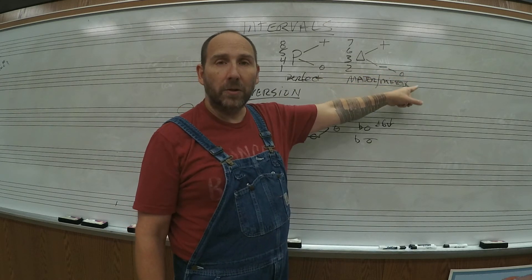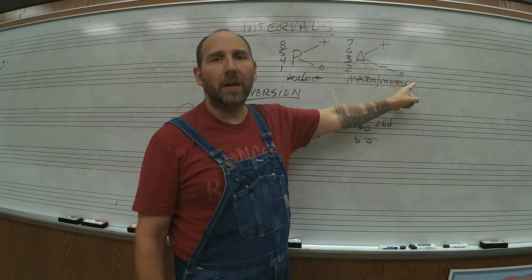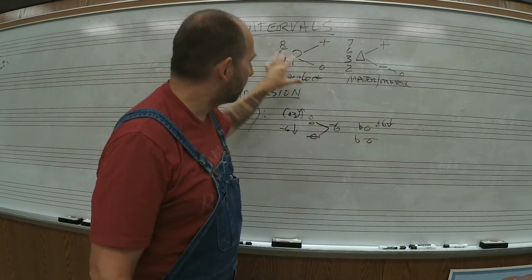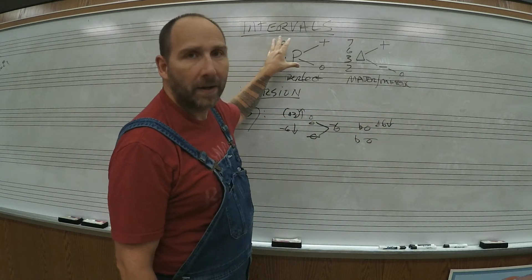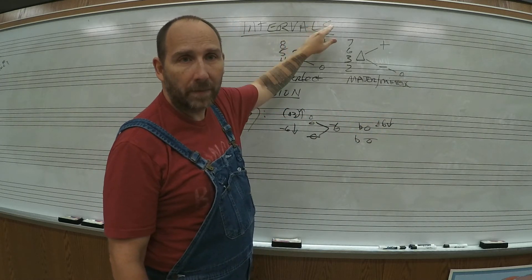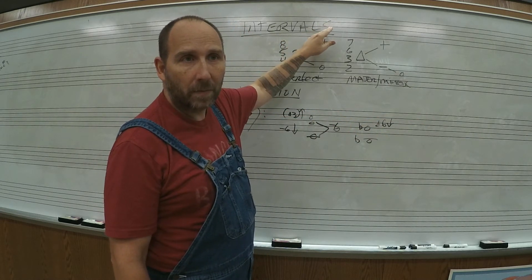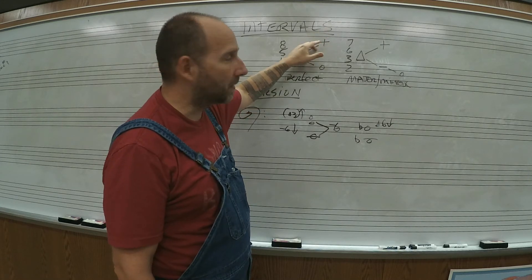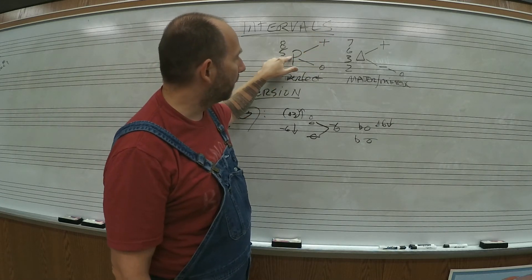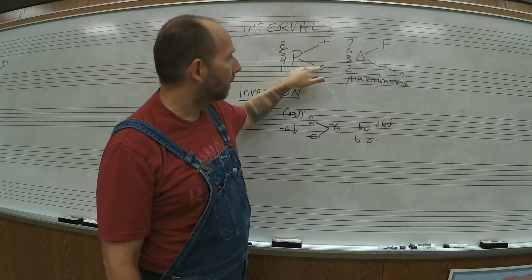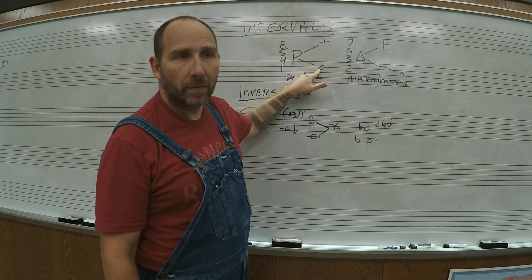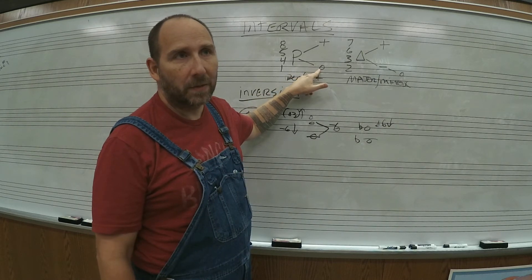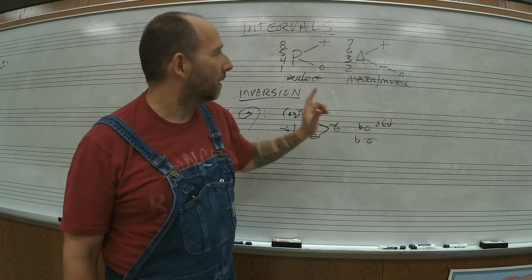You can make it smaller by two half steps and it becomes diminished. On the perfect side, you can make an interval bigger by increasing the size by a half step and it becomes augmented, or a perfect interval that has been reduced in size by a half step becomes diminished. That's just review.